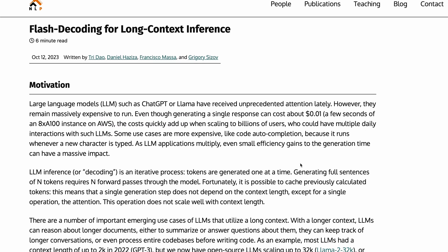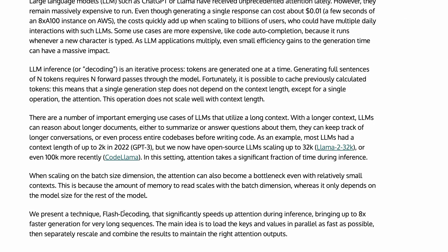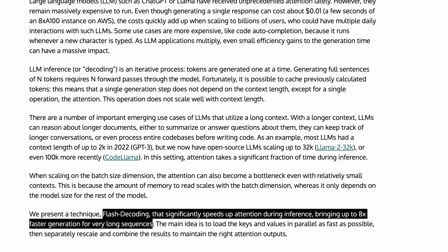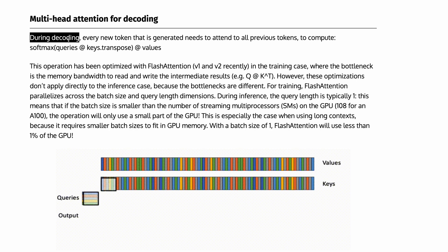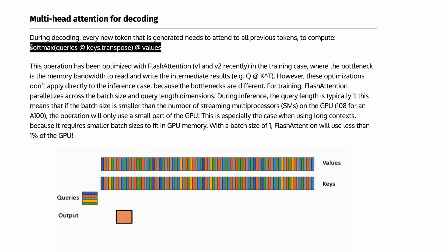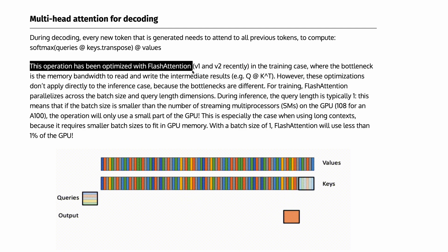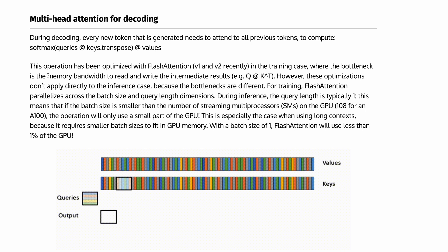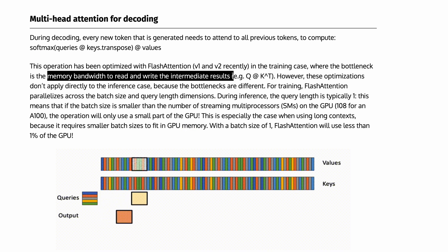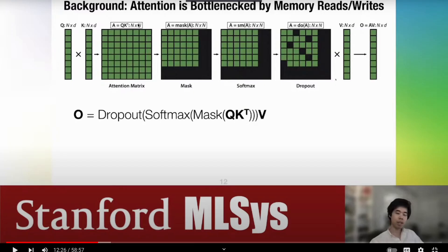This next paper is flash decoding for long context inference, focusing on how flash decoding can significantly speed up attention during inference, bringing up to 8x faster generation for very long sequences. During decoding, we compute queries, multiply keys, take a softmax, and then multiply values. The query and key result in a big attention matrix, then you apply masking, softmax, and dropout, and finally multiply by value. This operation can be optimized with flash attention in training cases where the bottleneck is memory bandwidth — reading and writing the intermediate n-by-n attention matrix produced by Q and K.